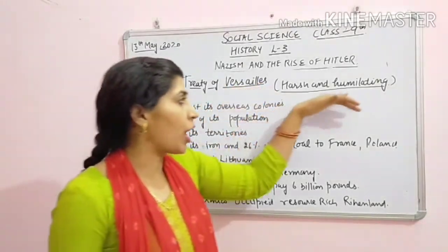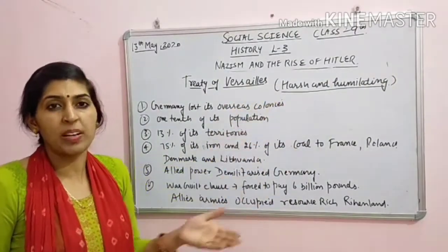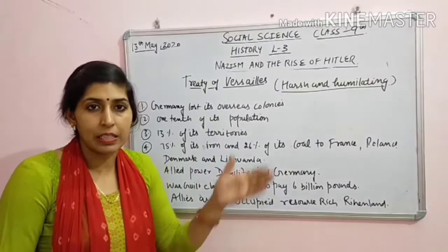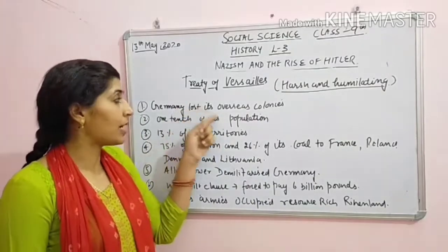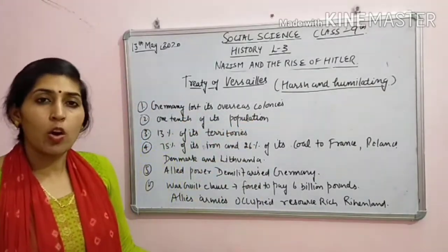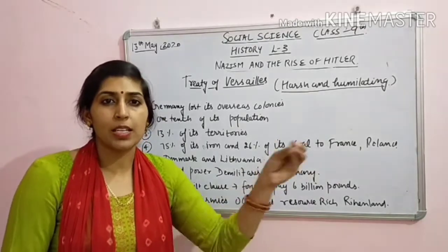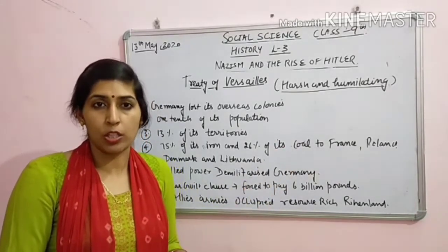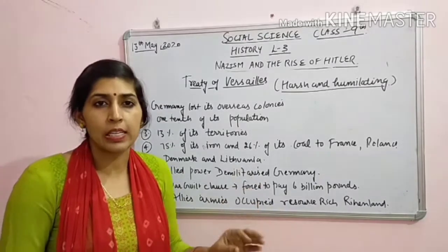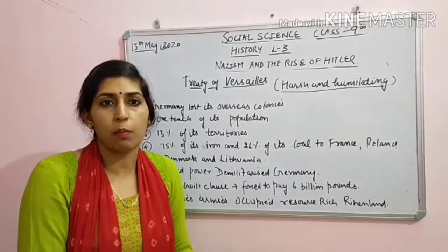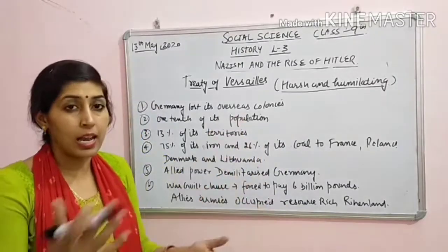Conditions in treaty of Versailles - Versailles ki treaty mein kaun kaun si conditions put ki rahi thi? Ye conditions thi jiski wajah se Germany ko lag raha tha ki usko bahut zyada disgrace karaya gaya hai ya usko hi guilty kyun maana gaya hai. Ye sari conditions thi jo Germany ko face karni padhi thi. Is treaty ko bola jata hai harsh and humiliating - kyun kaha jata hai abhi jab yeh padhengi to humein pata chal jayega - itni kathor aur humiliating, itna kisi ko neeche dikhane wala kaisi thi ye treaty ki conditions. First: Germany lost its overseas colonies - jo colonies thi jo captured kar rakhi thi, jo area Germany ne doosri doosri country mein, jaise ki Britain ki colony thi India, Germany ne bhi apni bohut saari colonies bana rakhhi thi, woh sari ki sari chhin li.